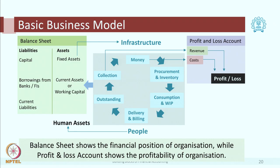From this money cycle the basic financial statements emerge. On one hand we have got a P&L account — it records your revenues, it records your costs, and it compares the revenues and the costs. The net result is given to you in the form of profit or loss.